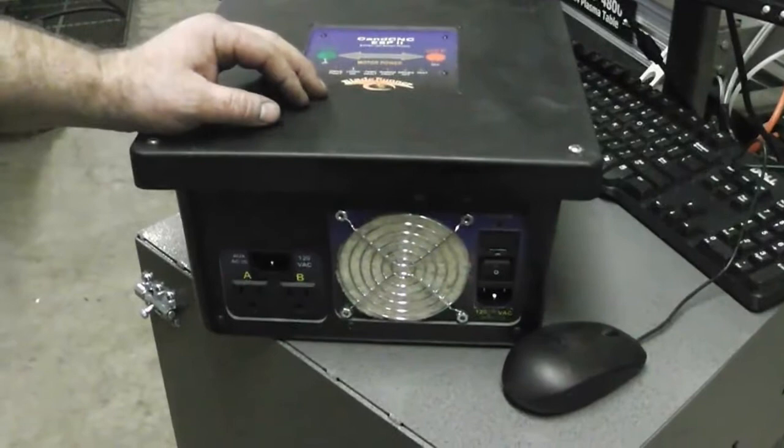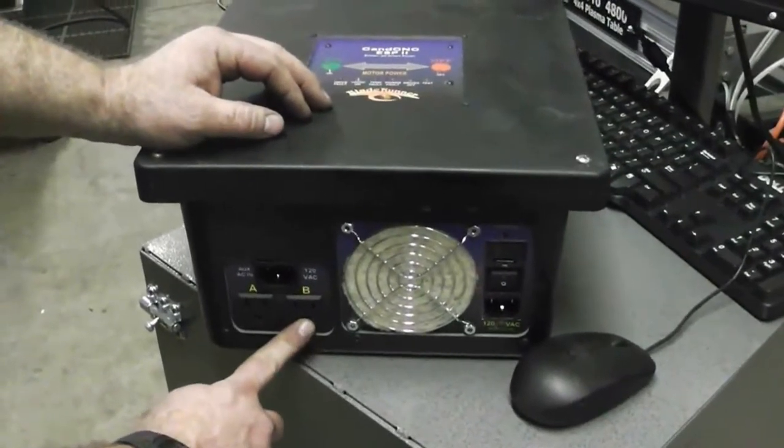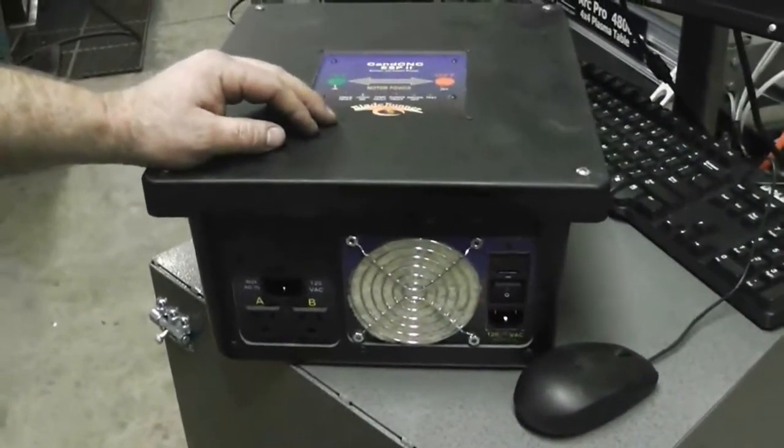This is the control cabinet removed to better show you the plug you need to get it into. It's the B plug.